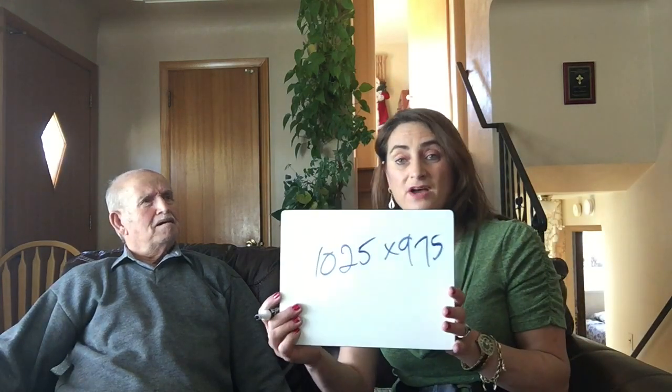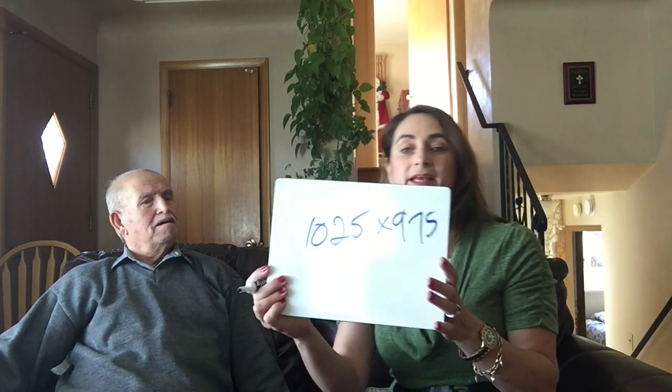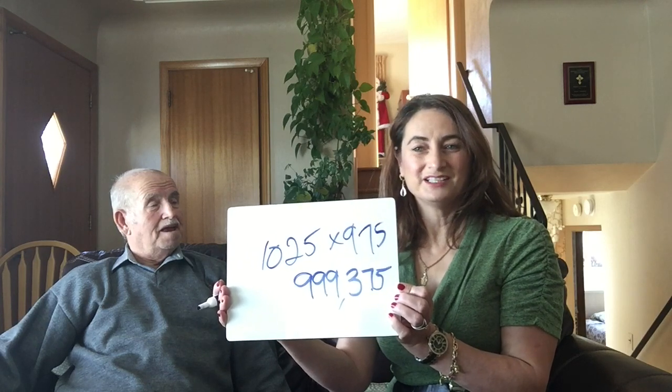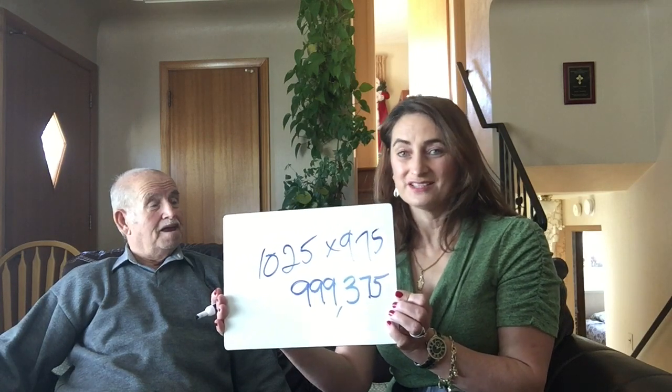Let's make this number a little bit more complicated. 1,025 times 975. — It is 999,375. — Let's check this one. 1,025 times 975. Did it give you 999,375?